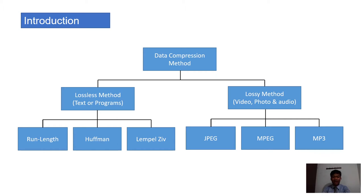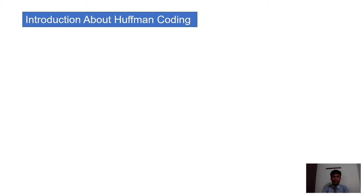The lossless method can also be divided into three methods: run length, Huffman, and LZ zip. Today we are going to discuss about the Huffman method to compress text files or programs. This method is used to optimize or minimize the size of any text or program.